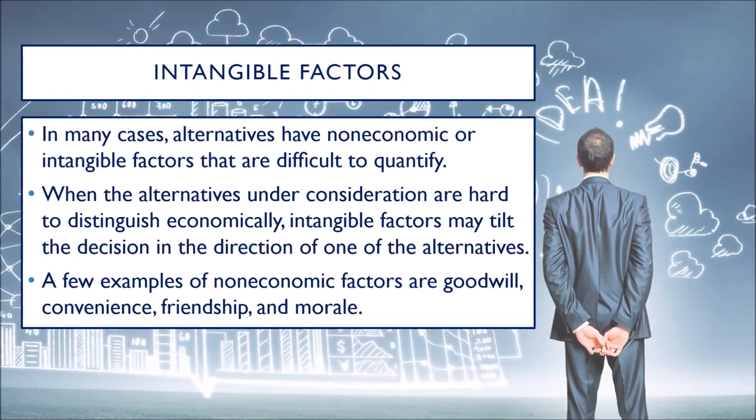Intangible factors are non-monetary or non-quantifiable — they have no corresponding numerical figures. However, they help in the evaluation of alternatives. For example, convenience, friendship, and morale. If economically alternatives A and B are the same, but the one offering alternative A is a close friend of yours, the friendship factor would likely influence you to choose alternative A.